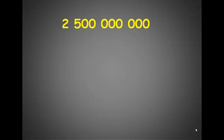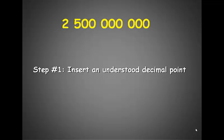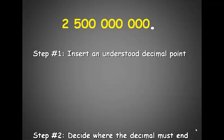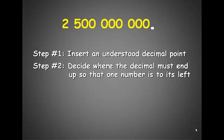So let's see the steps that we have to go to to change a number from standard form into scientific notation. Here is our number. Step 1 is to put the decimal point in its place, right at the end. Step 2 is decide where the decimal point must end up so that there is only one number to its left. Remember, we're trying to get a number that's less than 10 but greater than 0.